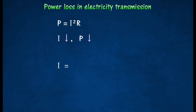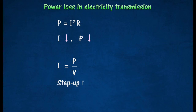This can be achieved by transmitting electricity at very high voltages, since current I is inversely proportional to the transmitting voltage V. The step-up of the transmission voltage can be done easily by using a transformer, since alternating current voltages can be changed easily without much loss of power.